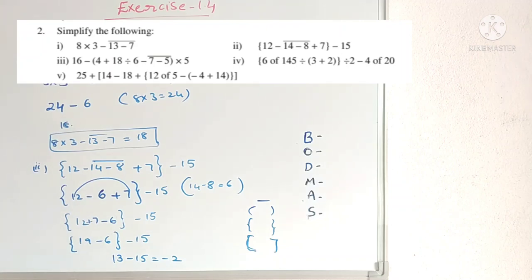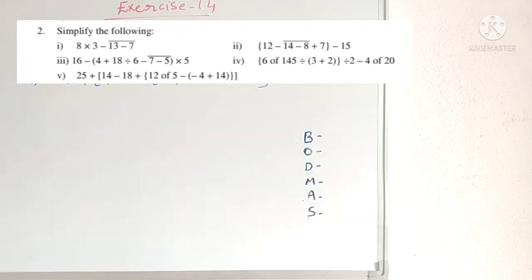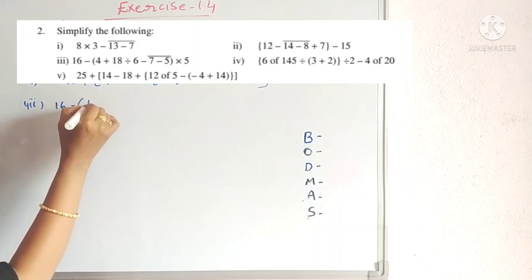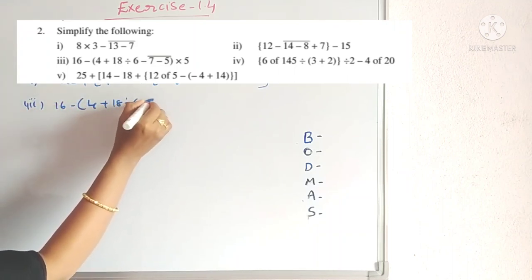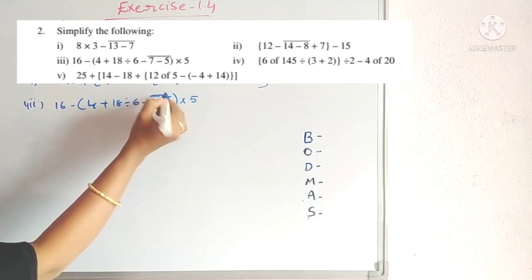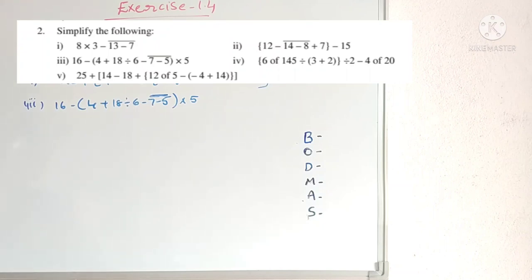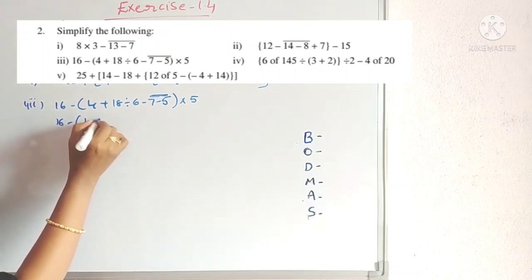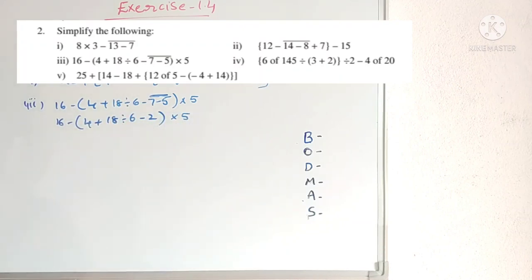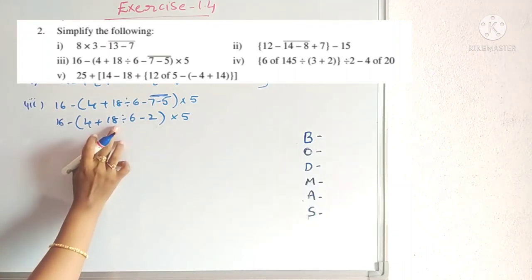Third problem: we have a vinculum, so first simplify that. The numbers under the bar: 7 − 5 = 2. Inside the bracket we also have division, addition, and subtraction. First do division: 18 ÷ 6 = 3.